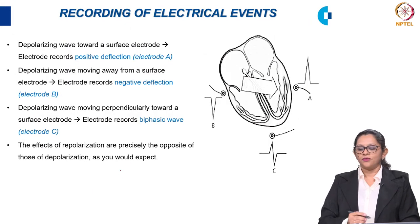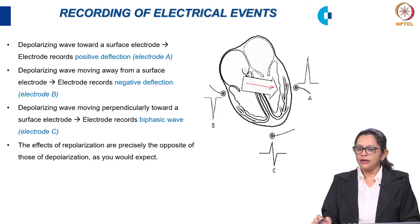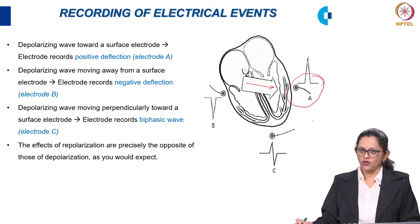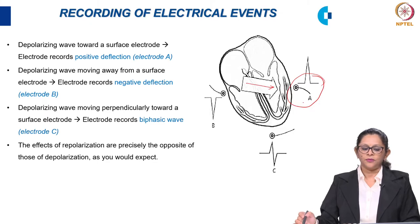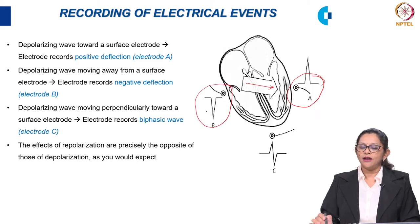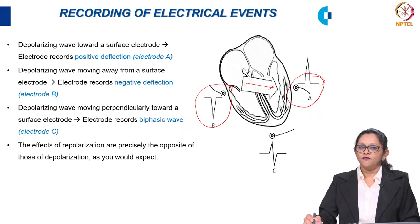Considering the same fact in the heart, the depolarization usually passes from the atrium to the ventricles, always downwards and slightly towards the left. When electrode A is placed in the direction of depolarization, it will be recorded as a positive deflection. Electrode B, which is away from the wave of depolarization, will produce a negative deflection. Any depolarization wave moving perpendicularly to electrode C will produce a biphasic wave.